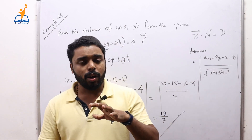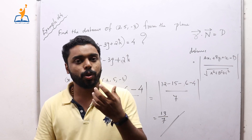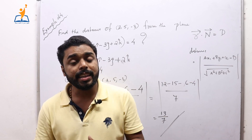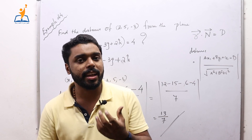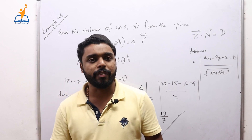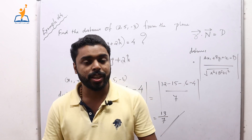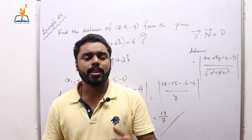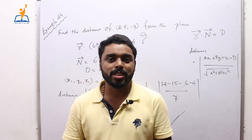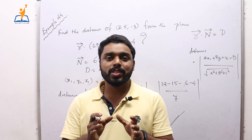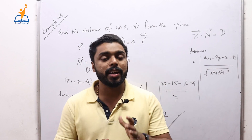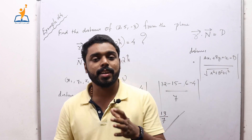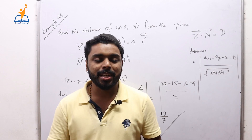The distance is 13/7. It is as simple as that — just memorize the equation well and you can easily solve all problems from this session. Understanding the concept behind each equation is key. This is towards the end of our chapter, and in the next class we will solve the last exercise, Exercise 11.3, from this chapter.